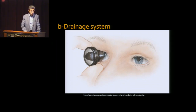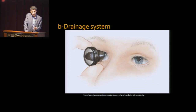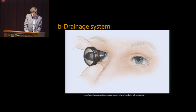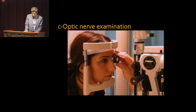To take a look at the drainage system, a specific type of contact lens is used. That contact lens touches the eye, and your physician will numb the eye before placing it on the eye in order to see the drainage system.